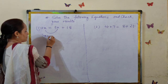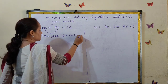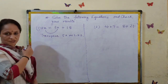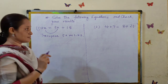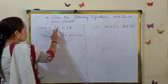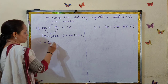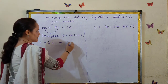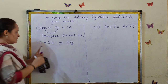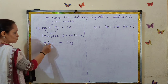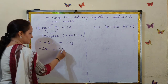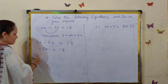So we transpose 5x to the left-hand side. Whenever a term is transposed from one side of the equation to the other, its sign reverses. When 5x moves to the left, it becomes minus 5x. On the right-hand side, 18 is constant. So we have 3x minus 5x. Like terms — 3 minus 5 equals minus 2x equals 18.